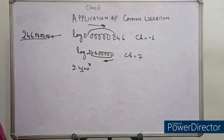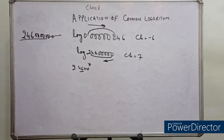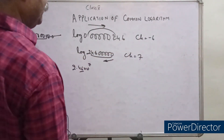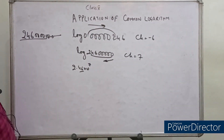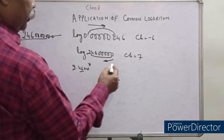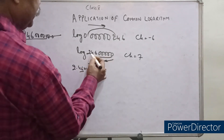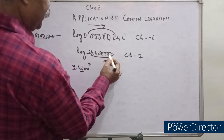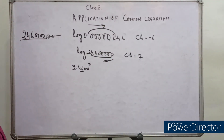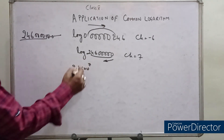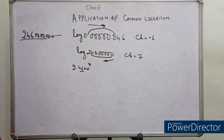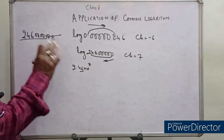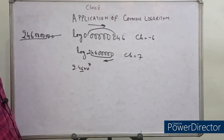This is the main technique to find the characteristics. If the decimal is shifted to the left to reach the first non-zero digit, the characteristics is negative. If the decimal shifts to the right, it is positive. The actual meaning of characteristics is the power of 10 when the number is expressed in standard form — the power of 10 is the characteristics.